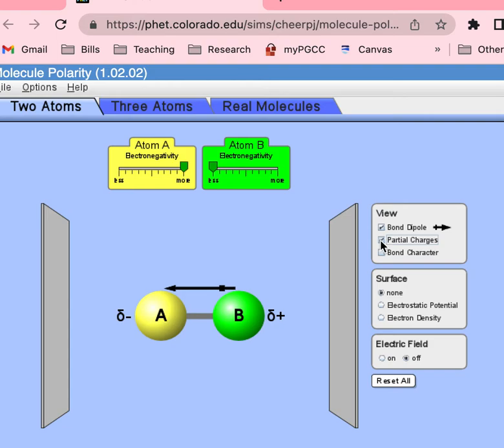Then it says now turn on the electrical field. That's for the next part, number seven. Draw what you see. The electrical field can be turned on here.